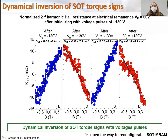The dynamic control of the SOT is further evidenced, displaying the normalized second harmonic Hall resistance at electrical remanence after initializing with voltage pulses of +130V and -130V. A reproducible switching of the SOT sign is obtained after initializing with negative and positive voltage pulses. This basically opens the way to reconfigurable spin-orbit torque memory.